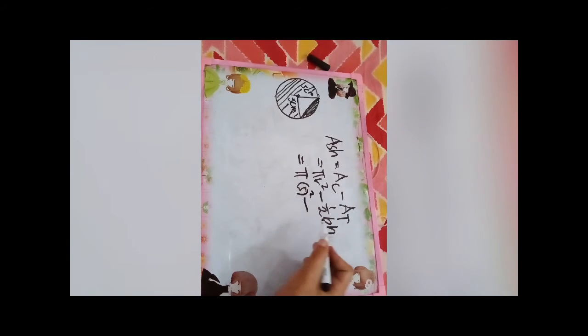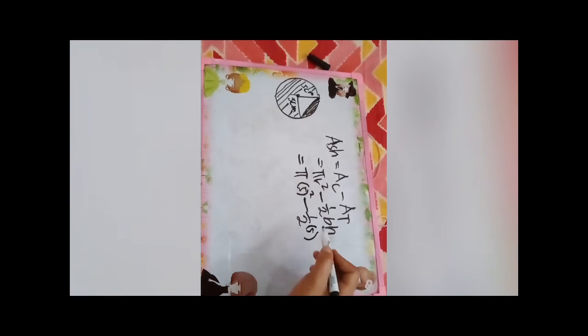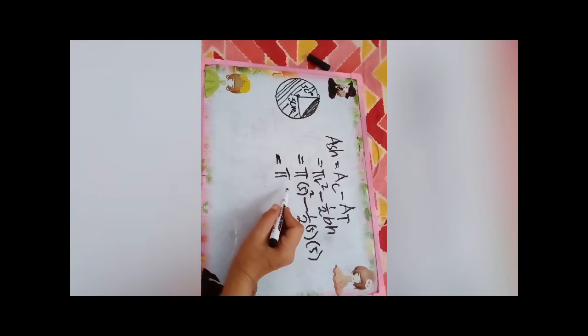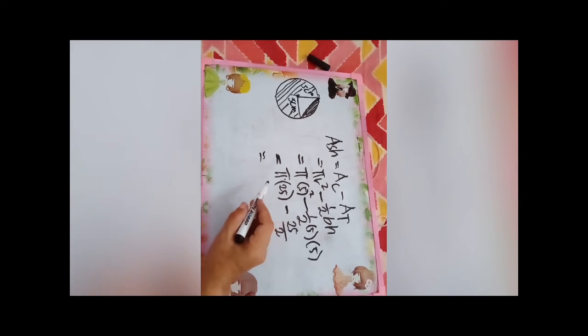One-half times the base times the height. So 5 squared equals 25. So one-half times 5 times 5 equals 25 over 2. So π times 25 equals 25π minus 25 over 2.